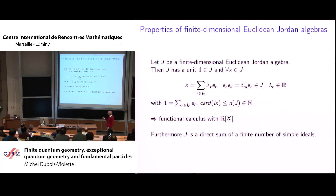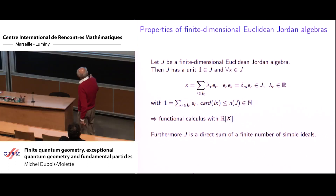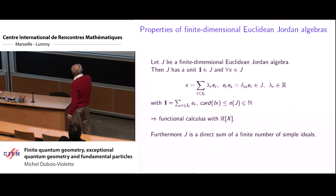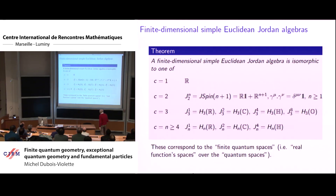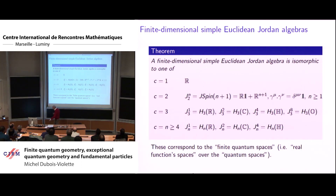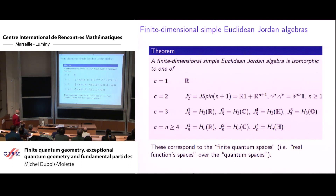It is a finite number, so from this you have the functional calculus with polynomials. Furthermore, any such algebra has a unit, and any such algebra is a direct sum of a finite number of simple ideals. To classify these algebras you only have to classify the simple ones. This was done by Jordan, von Neumann, and Wigner in a paper of 1934.